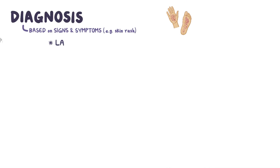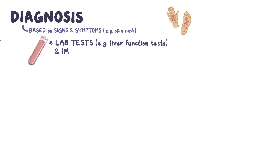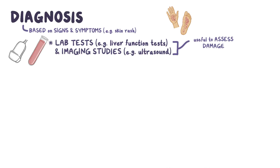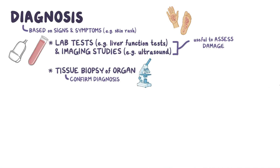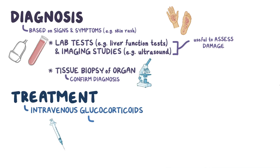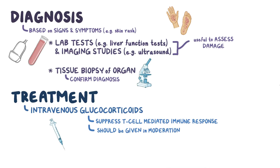Diagnosis of graft-versus-host disease is primarily based on signs and symptoms, like a skin rash. Lab tests such as liver function tests and imaging studies like liver ultrasound are often useful to assess the damage caused to specific organs. Finally, a tissue biopsy of the affected organ can help confirm the diagnosis. Treatment for both acute and chronic graft-versus-host disease is intravenous glucocorticoids to suppress the T-cell-mediated immune response. However, these should be given in moderation in order to avoid raising the risk of infection.